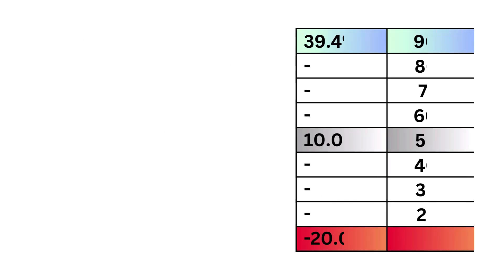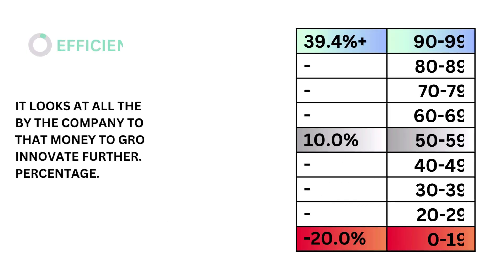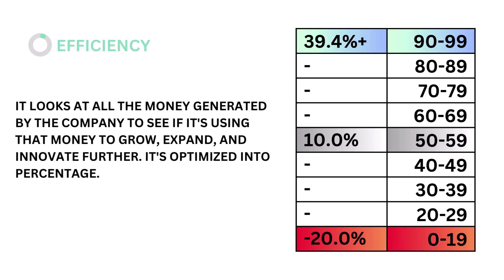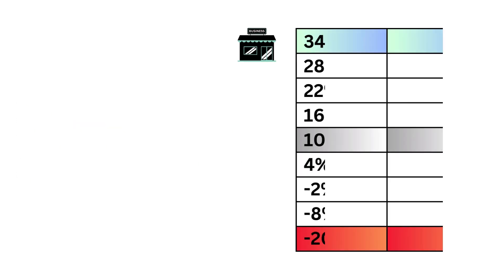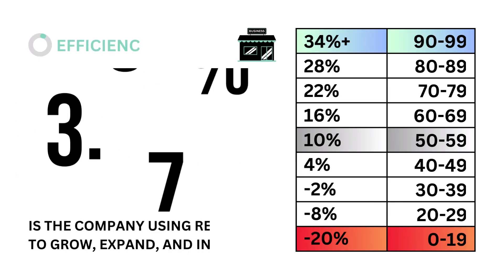Fifth, efficiency. Efficiency looks at all the money generated from the company to see if it's using that money to grow, expand, and innovate further. It's optimized into a percentage. The models tell us that an efficiency rate of 10% is considered average. Here's our efficiency grade.